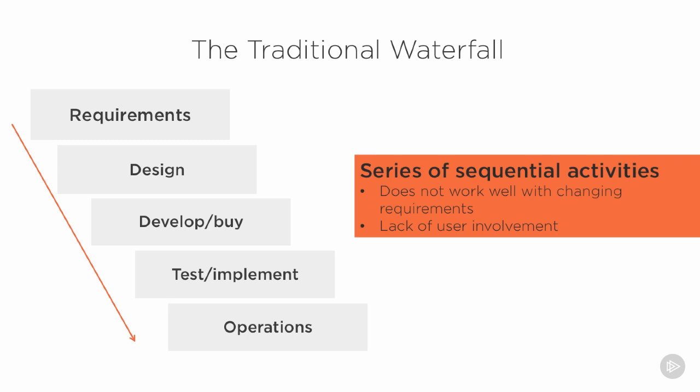This is the traditional waterfall: a series of sequential events that hopefully result in the delivery of a system that meets both the user requirements and our security requirements. However, the problem with this model is that it is so structured. If something evolves or changes partway through — say, while we're building or buying the system we find that some functional needs have changed — it can be very difficult for this model to be flexible and adapt to those changes. Things often just continue on as they are, even if that won't deliver what was really needed in the end.